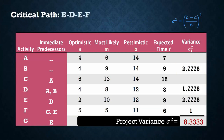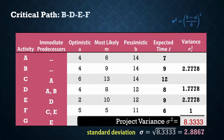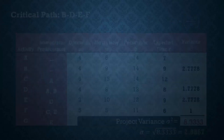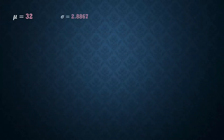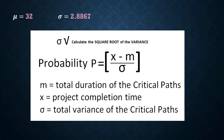Then taking the square root, we have the project standard deviation of 2.8867. Although the uncertain activity time estimates are beta distributed, we can approximate the project completion time by a normal distribution. In this case, with mean equals 32 and standard deviation 2.8867.